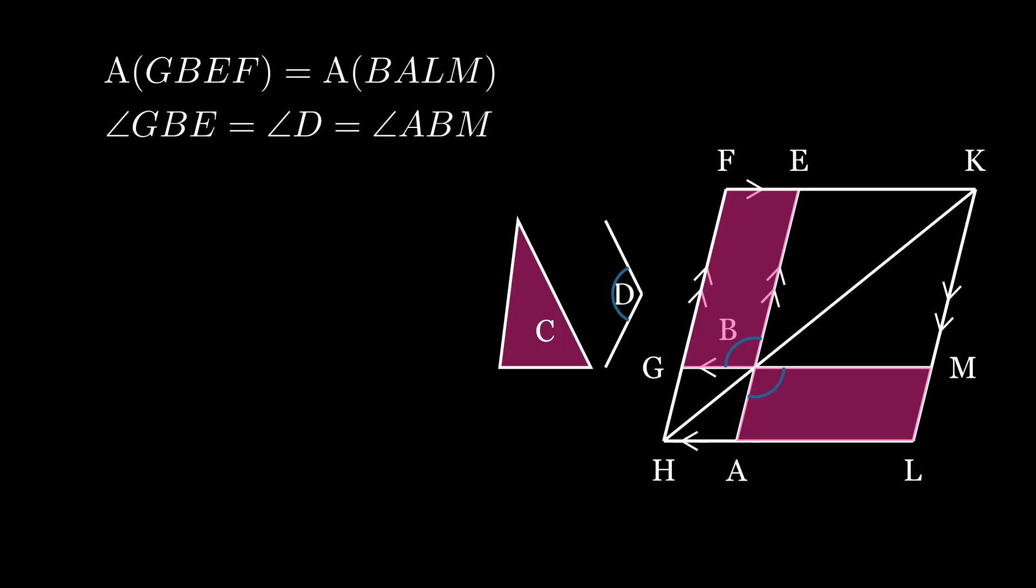We therefore have the parallelogram ABML, with AB as one of its sides, built using angle D, namely ABM, and has area equal to triangle C.